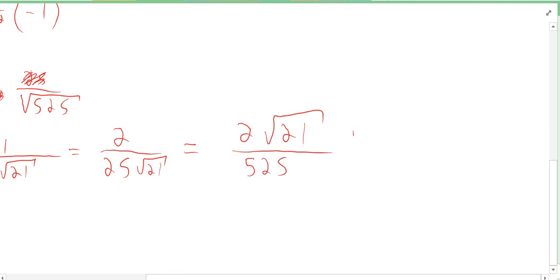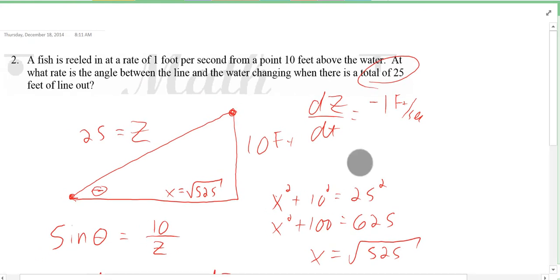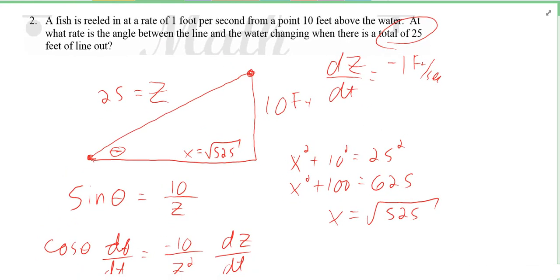And that's going to be in radians per second. Make sense? It should also make sense that theta is getting bigger, right? As the fish gets reeled in, the angle of elevation from the water should be getting larger. Thank you very much.